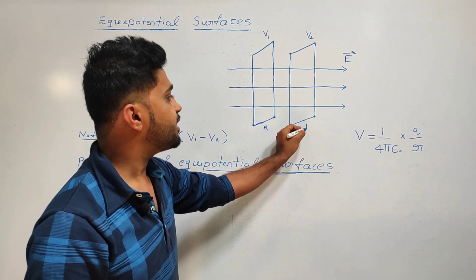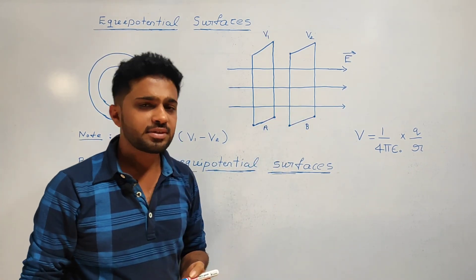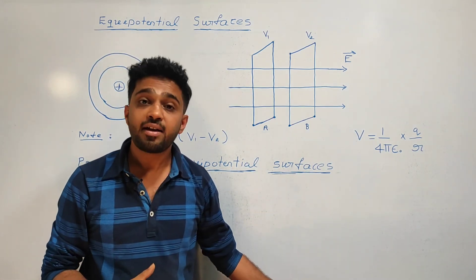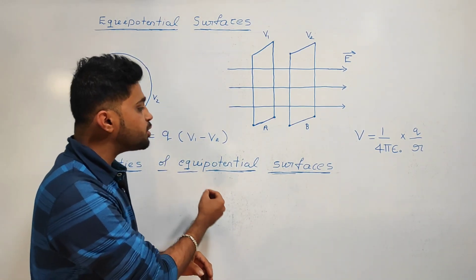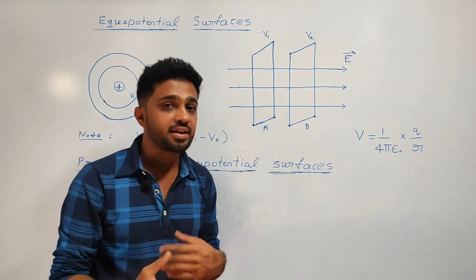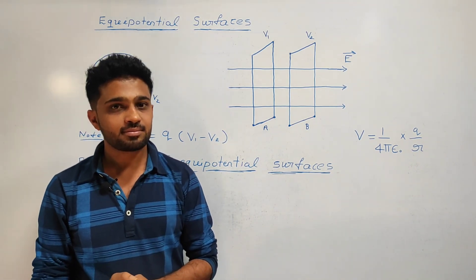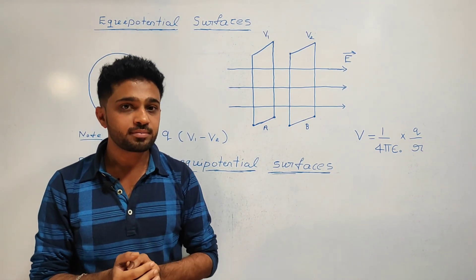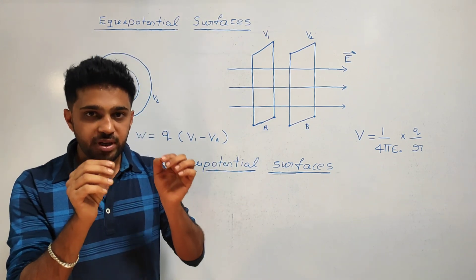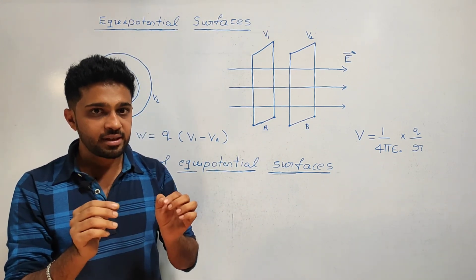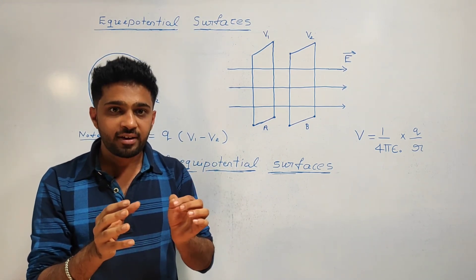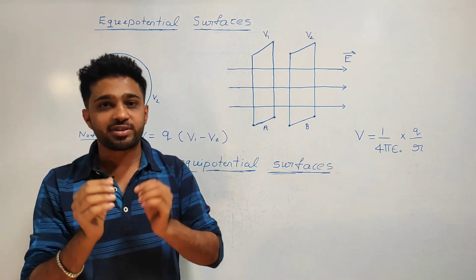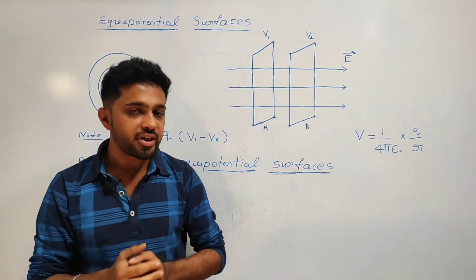Now we will study properties of equipotential surfaces. First property: on an equipotential surface, at any point, the electrostatic potential is constant.